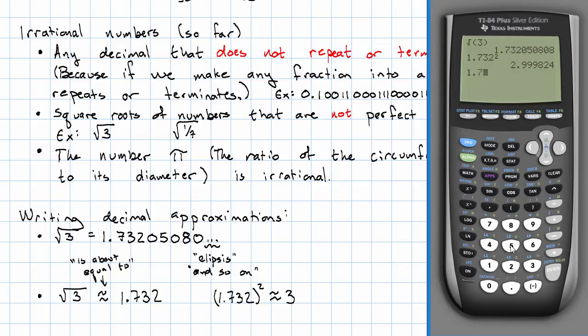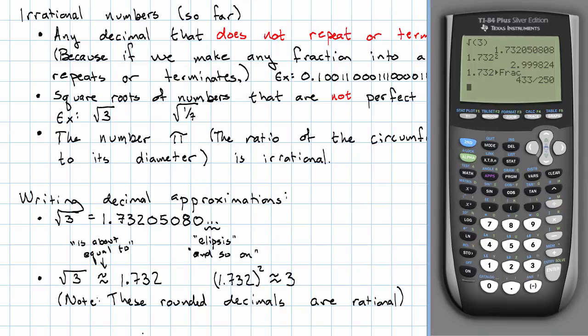But 1.732 is a rational number. It's not exactly the square root of three. So be aware when you're rounding an irrational number that you are rounding. You're not giving the exact square root of three.